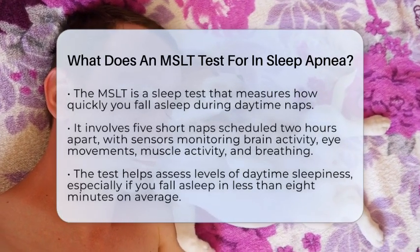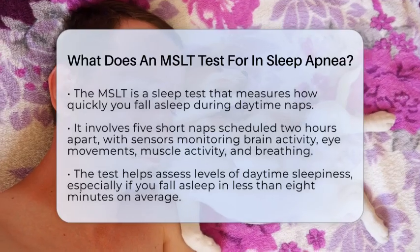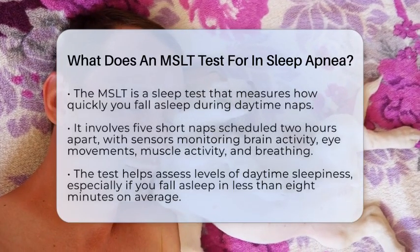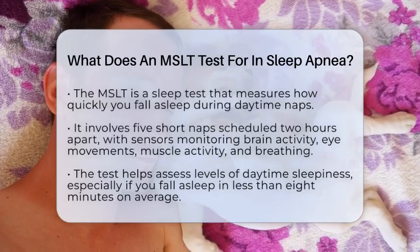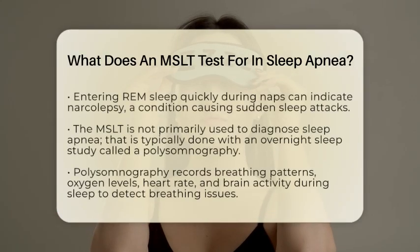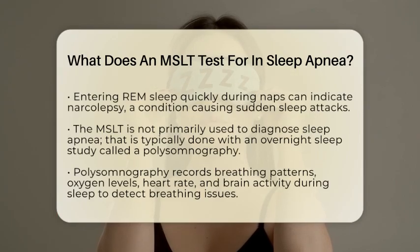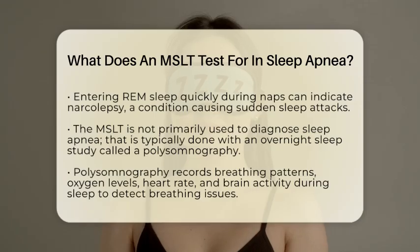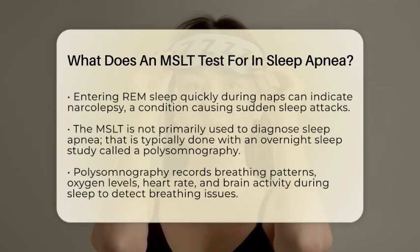This test measures how quickly you fall asleep during several short naps scheduled throughout the day. Usually there are five naps spaced two hours apart. During each nap, sensors monitor your brain waves, eye movements, muscle activity, and breathing. The goal is to see how fast you can fall asleep and if you enter REM sleep, which is the deep sleep stage associated with dreaming.